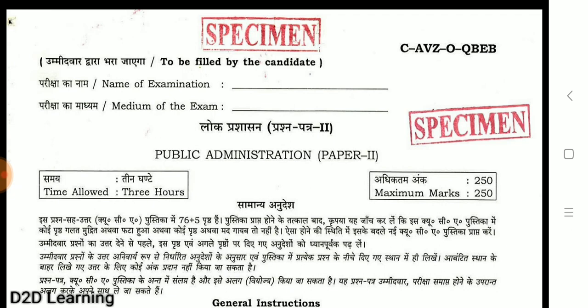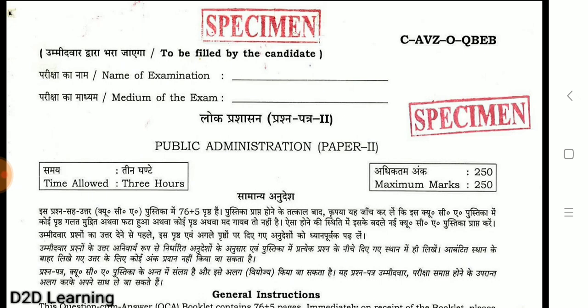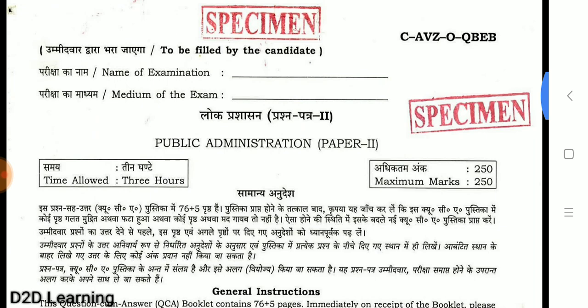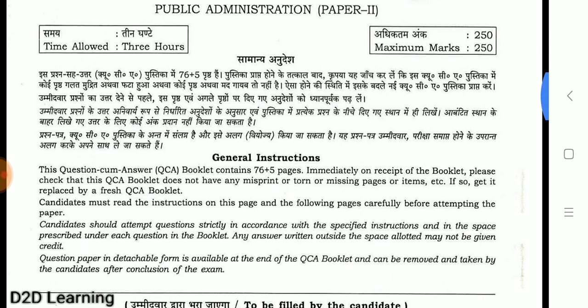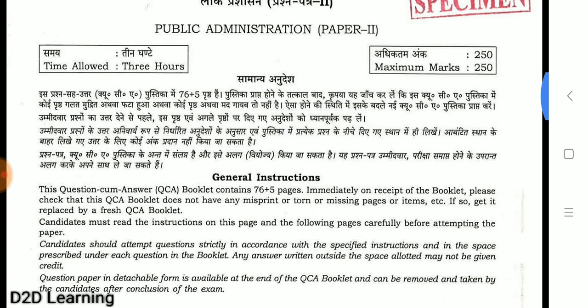If you want to download just one option, you can download it. For example, Public Administration Paper 2 — this is a model answer sheet question-cum-answer booklet you can download from the UPSC website. This video tells you how to learn the optional paper and approach its strategy.